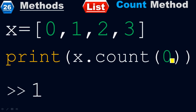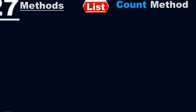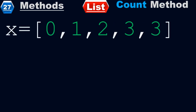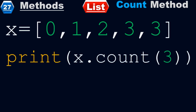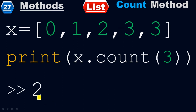Example number 27: x equals to 0, 1, 2, 3, 3. Print of x dot count of 3, which returns 2. This time I have 3 here and 3 here, so there are a total of two elements of 3. When you take print of x dot count of 3, you will get 2, because it counts the total number of similar elements.